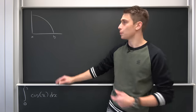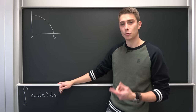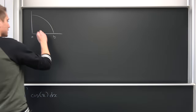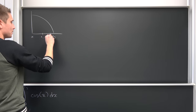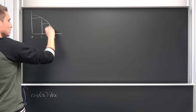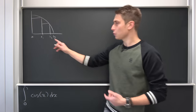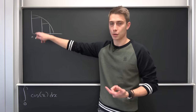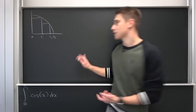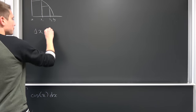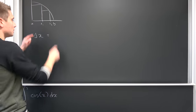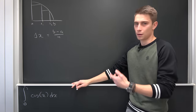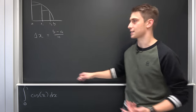We are going to approximate this with infinitely many rectangles which have the same base. So we take a = x₀, then x₁, x₂, and we put rectangles in. We take n and let it go to infinity — infinitely many rectangles. The distance from x₀ to x₁, or x₁ to x₂, is always the same: delta x. We define it as b minus a over n, where n is the number of partitions of our x-axis.